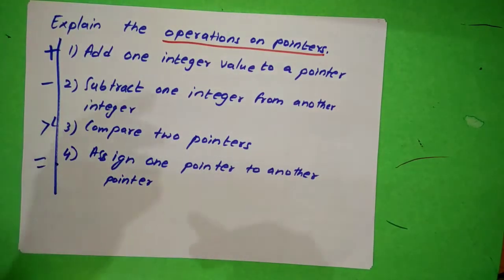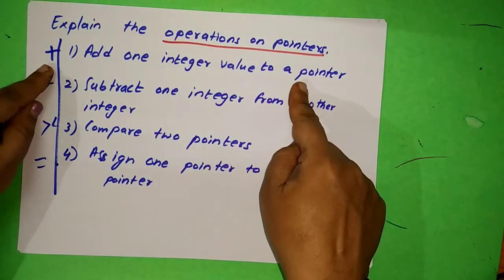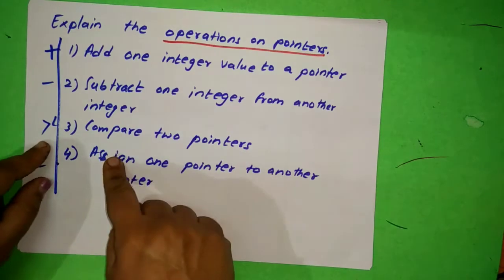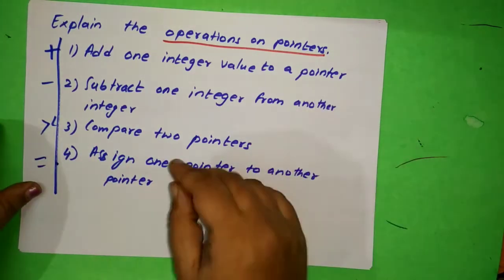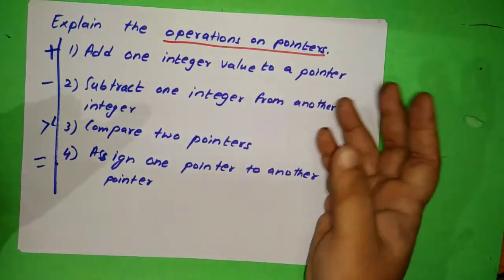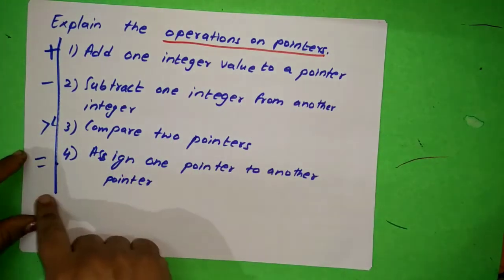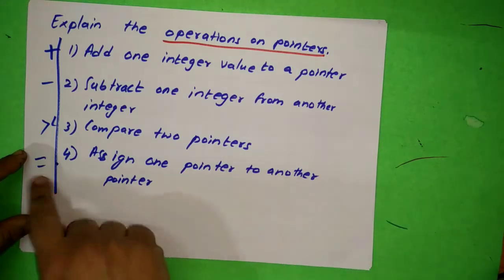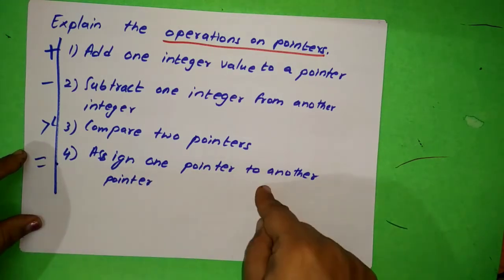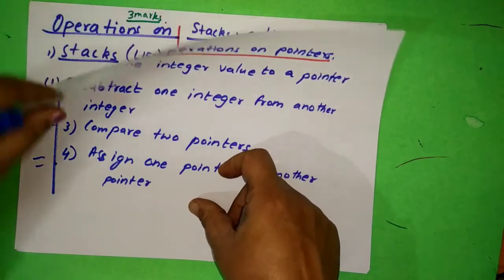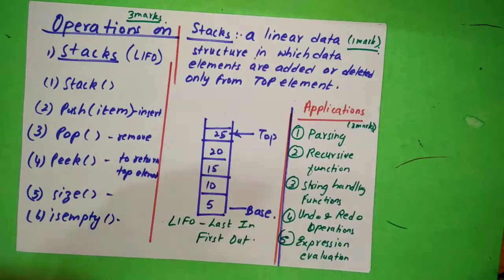If you remember these four, it is more than enough. Add one integer variable to the pointer, minus means subtract one integer from another integer, and greater than, less than you use for comparison - taller, she's taller, he's taller than her - all these things we use because we are comparing. And equal to - assign one, the assignment operator, so you will assign one pointer to another pointer. Clear?